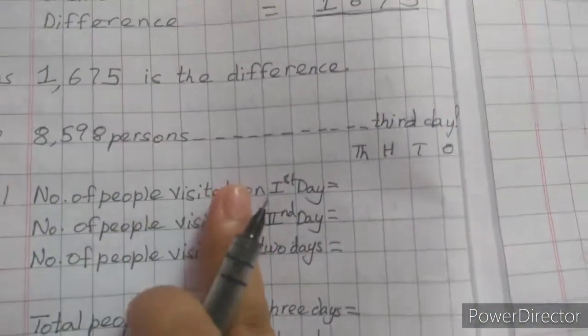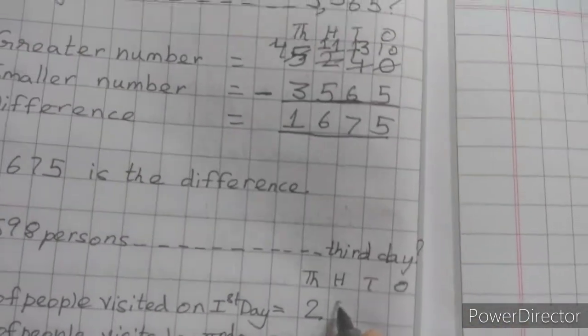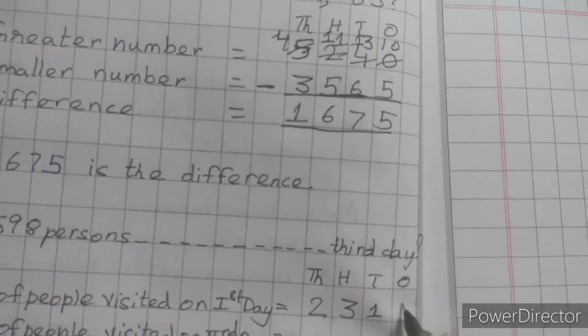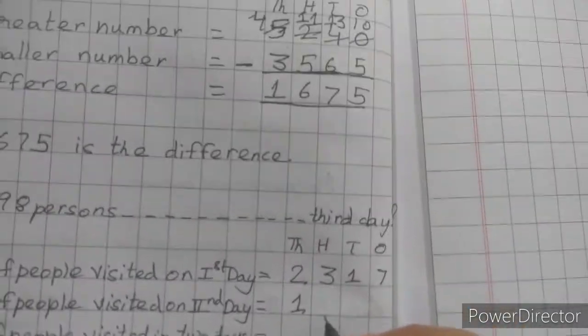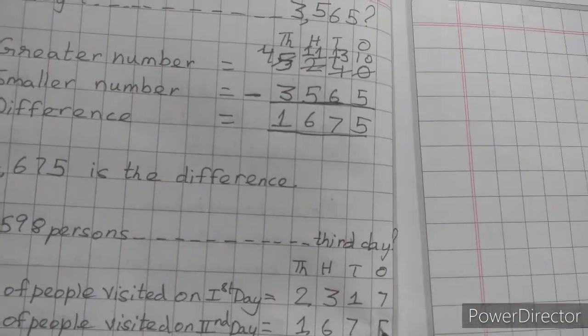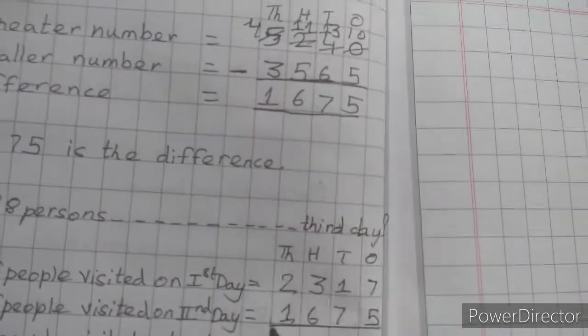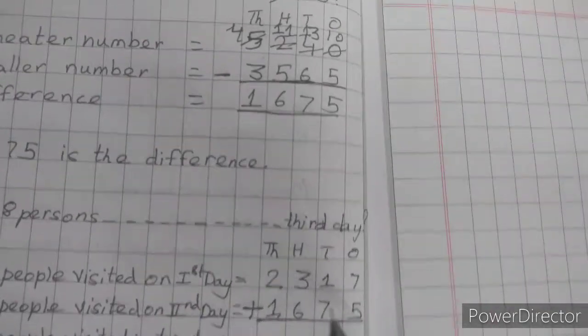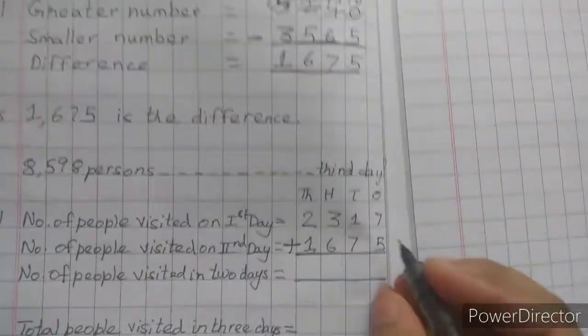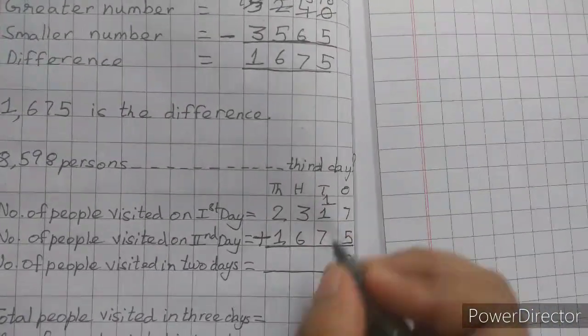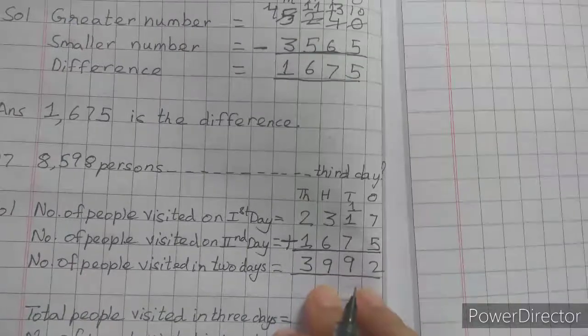So what we will write down here? We will write: Number of people visited on first day is 2,317. Then number of people visited on second day, how much is it? 1,675. So from this what will we get as answer? Number of people visited in two days. So what do we have to do here? Add this. Remember, here we add two days, then from total we will subtract. Then only we will get the answer. So 7 plus 5 is 12, carry the 1. 1 plus 1 is 2, 2 plus 7 is 9, 3 plus 6 is 9 again, 2 plus 1 is 3. So how many people visited in two days? 3,992.